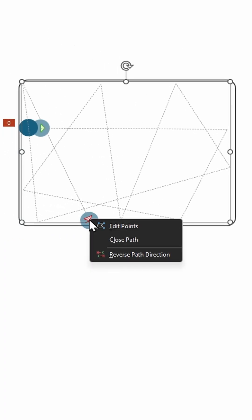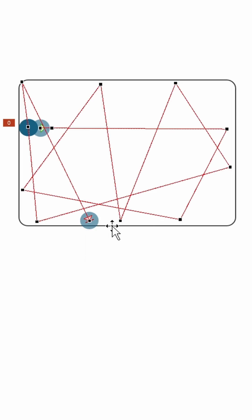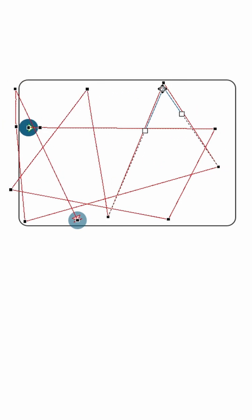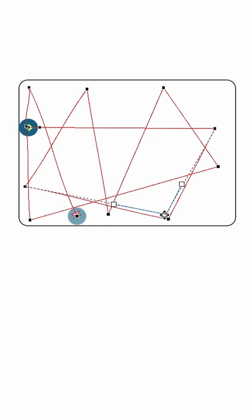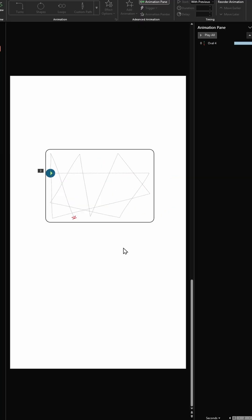I'm going to fix some of these points because the ball is going outside of the container. So right-click on the animation path and click on Edit Points. Wherever we have these points closer to the edge, let's bring them slightly inwards. I think I have all my points in the right places now.